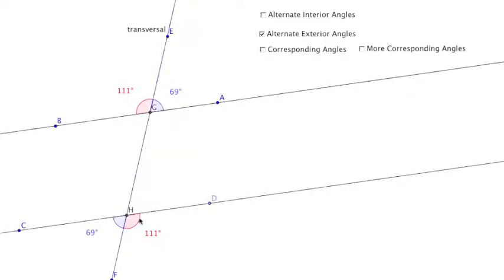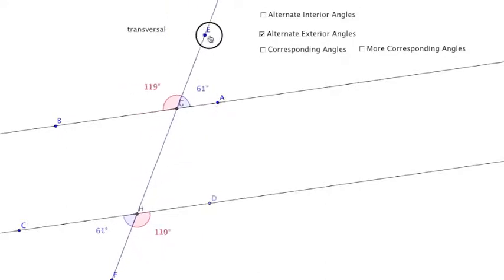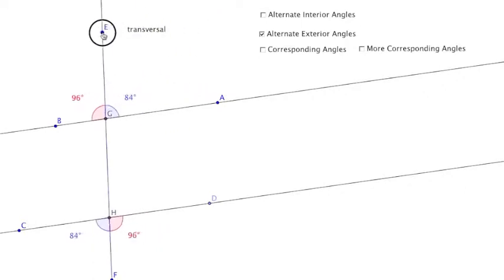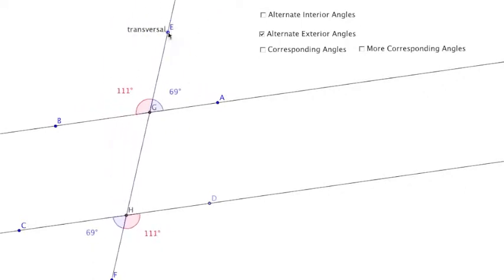Angle BGE is congruent with angle FHD, and then angle CHF is congruent with angle EGA. Those are alternate exterior angles. And even if I move the transversal, those angles are going to remain congruent.